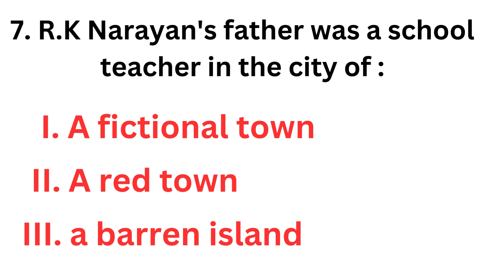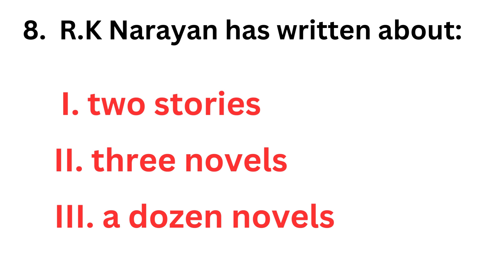Next one: R.K. Narayan's father was a school teacher in the city of — options are a fictional town, Red Town, or Barren Island. The correct answer is a fictional town.